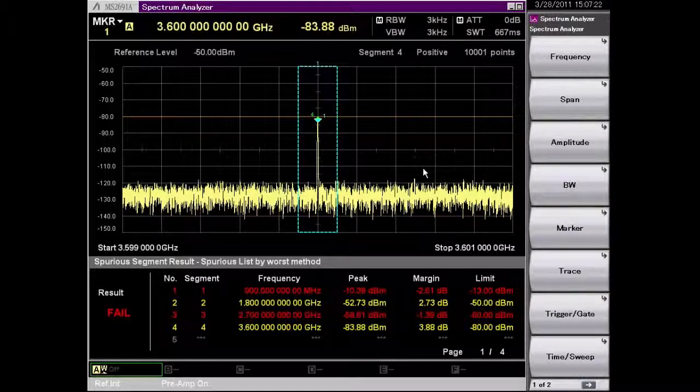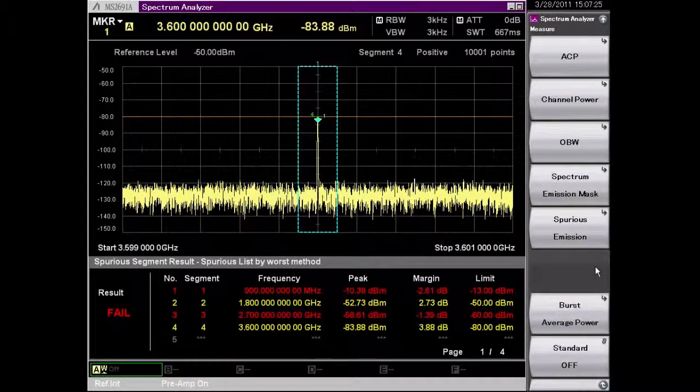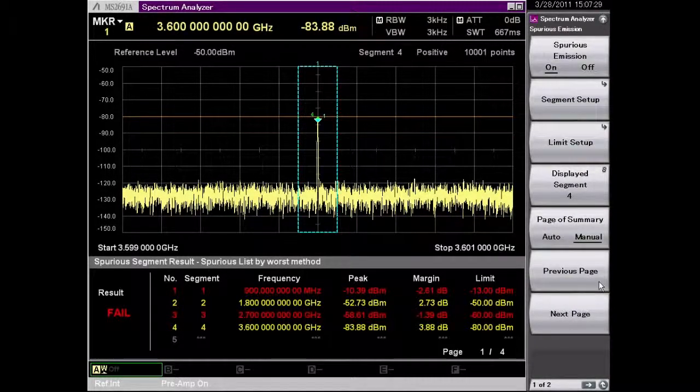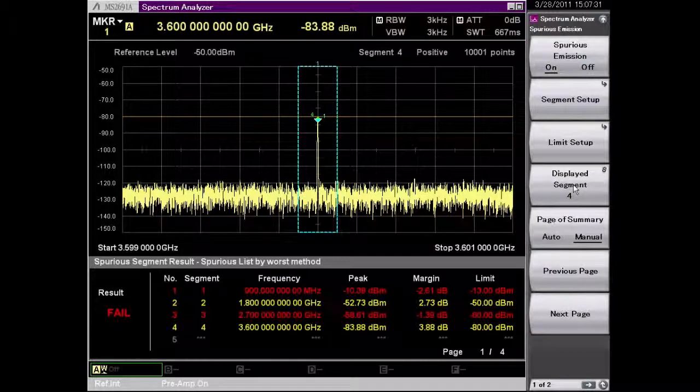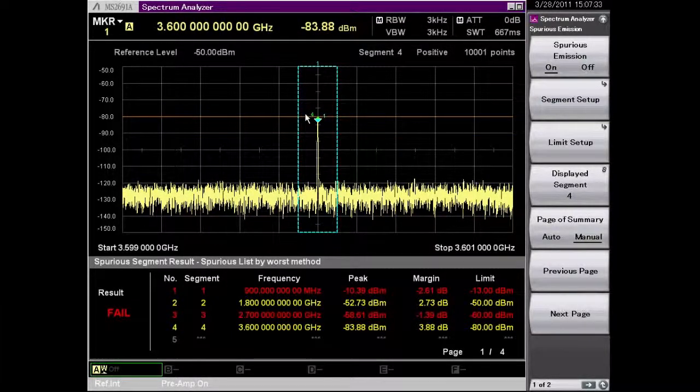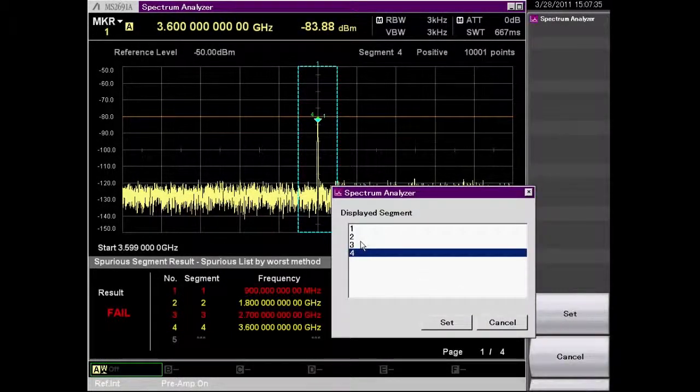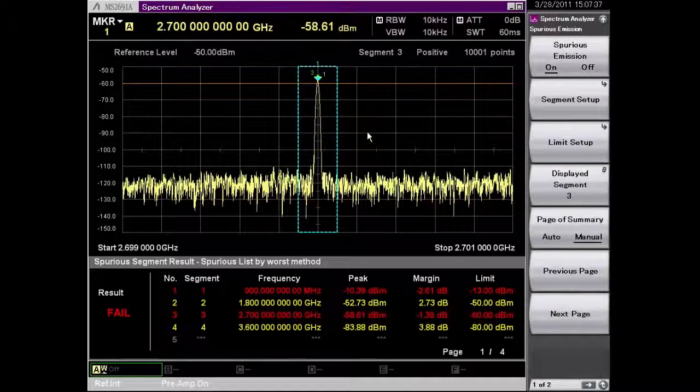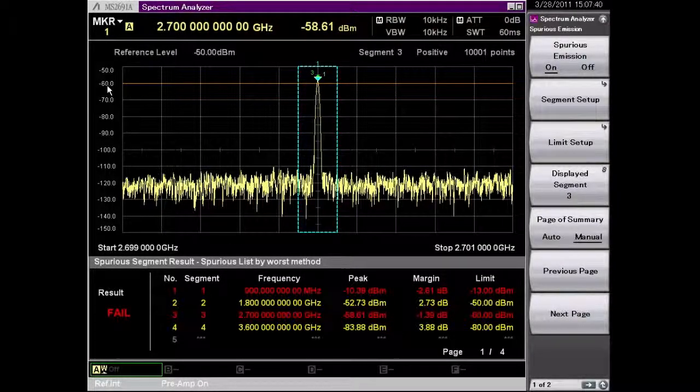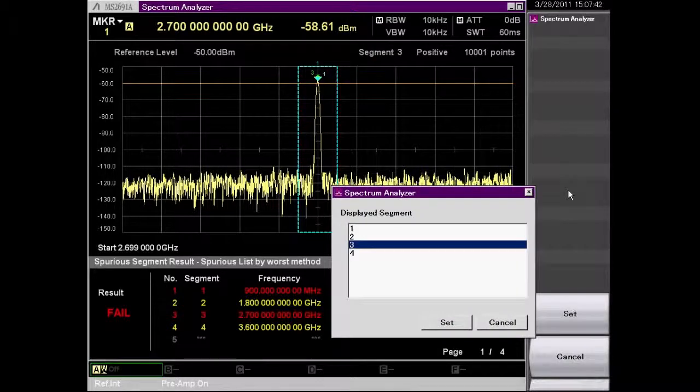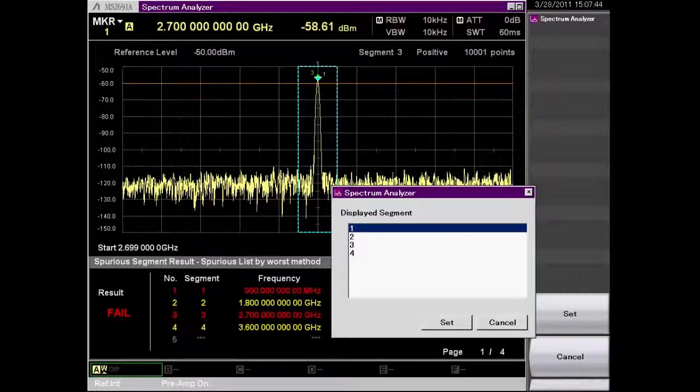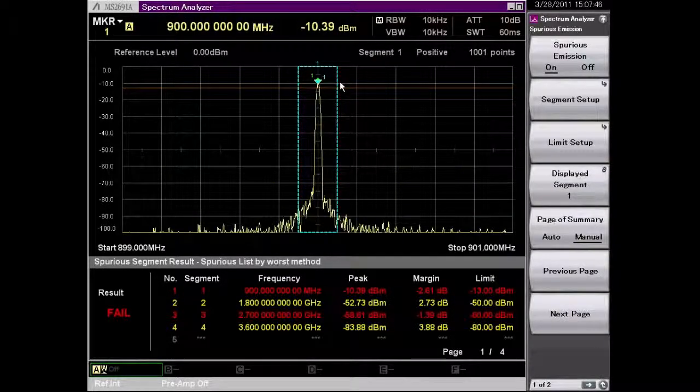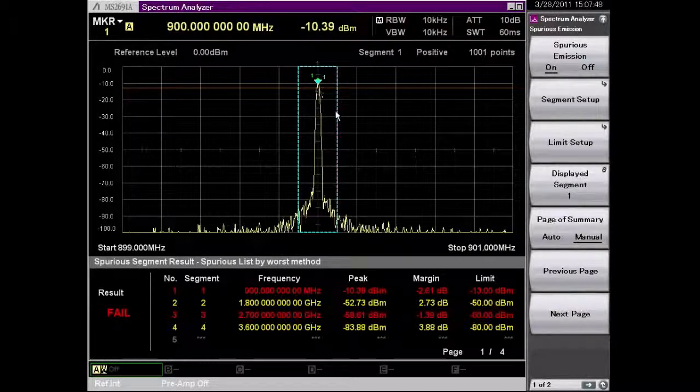So I can go in to measure and actually look at each one of those bands. Looking at segment 4 right now, I can change that to be segment 3. As you can see I'm just barely failing my limit of minus 60. Also look at segment 1. And here I'm failing my limit of minus 13.